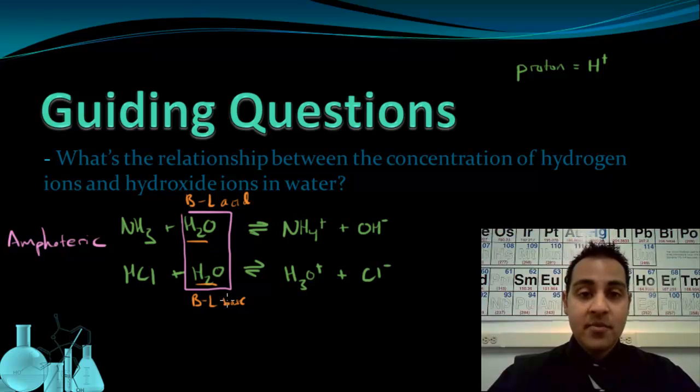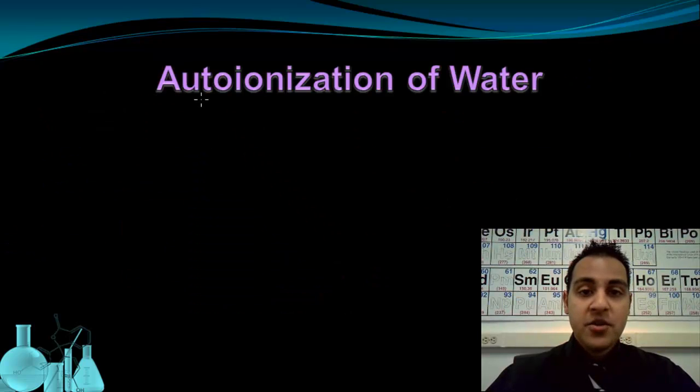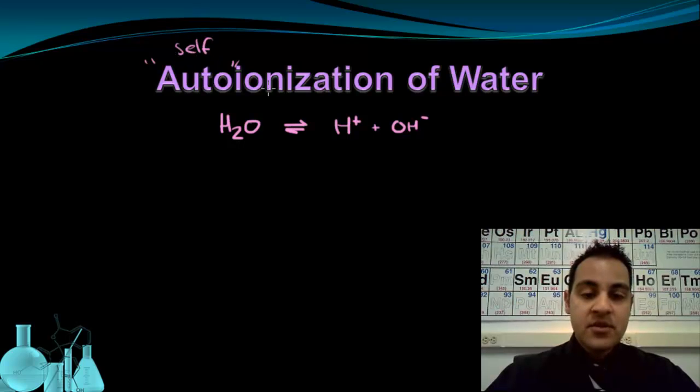Because water can act as an acid or a base, it does something pretty interesting that we're going to take a look at in this video called auto-ionization. The auto-ionization of water essentially means that water is going to become ions. It's going to ionize. So it can become H+ and OH-. The auto part here means self. So this is self-ionizing. Water will become ions on its own.